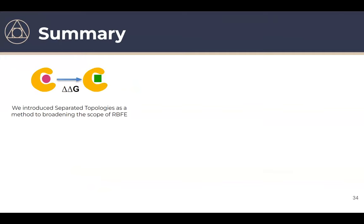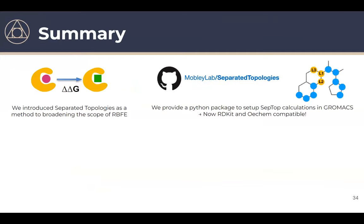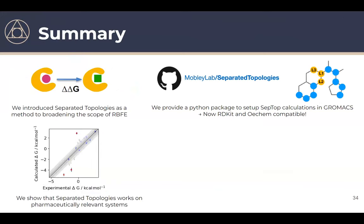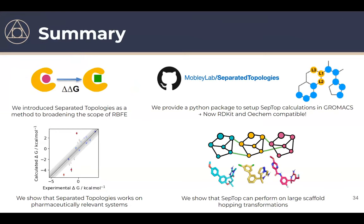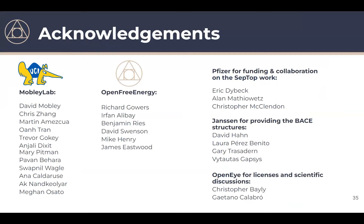In summary, I introduced the separated topologies method, showed some implementation details in GROMACS using RDKit, and demonstrated that it performs well on two test systems and can be used when different ligand scaffolds fall outside the scope of other methods. I'd like to thank the Mobley lab where I did most of this work, especially my advisor David Mobley, and OpenFE for help getting RDKit integrated. I'm happy to take any questions.